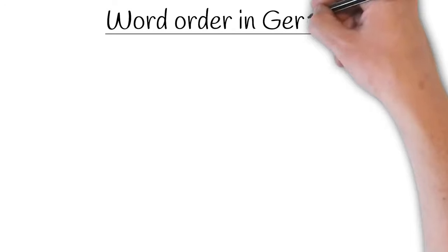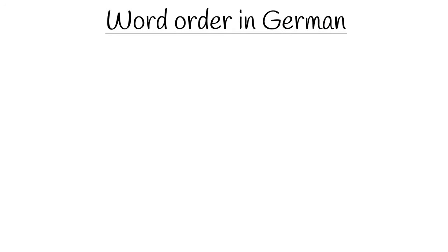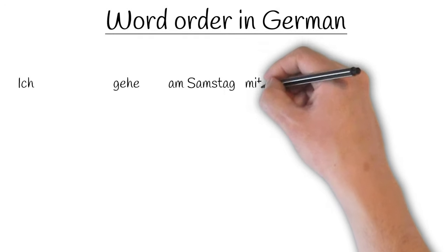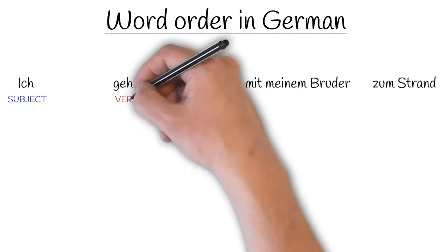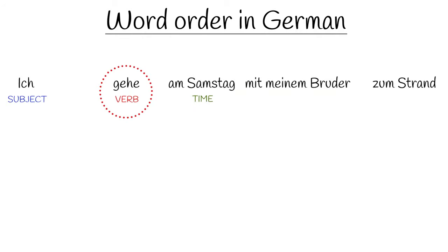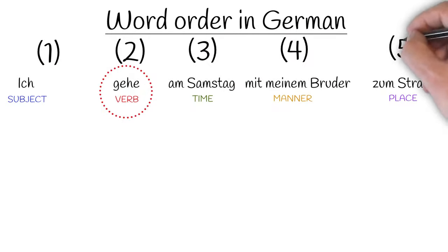Now let's compare that with word order in German, which is in some ways just as flexible as English, but in others has a couple of very strict rules which we need to learn as native English speakers. Let's use the translation of the example we used in English: 'Ich gehe am Samstag mit meinem Bruder zum Strand.' We start with the subject, 'ich.' The verb 'gehe' is in second position. Then we have the time 'am Samstag' (on Saturday), then the manner 'mit meinem Bruder' (with my brother), then the place 'zum Strand' (to the beach). Let's label these five different positions: one, two, three, four, and five.